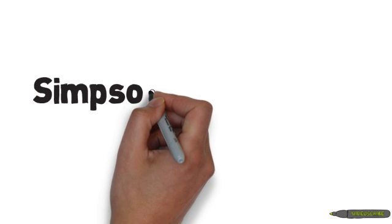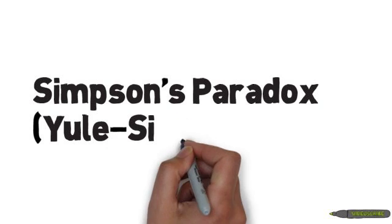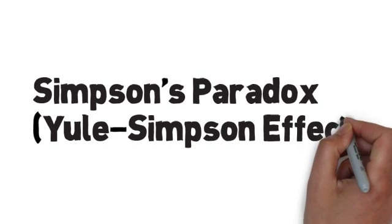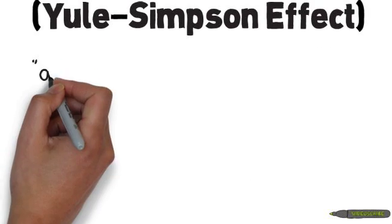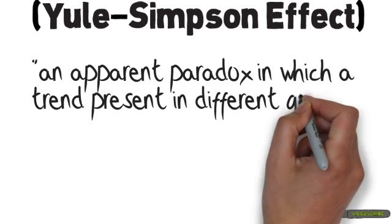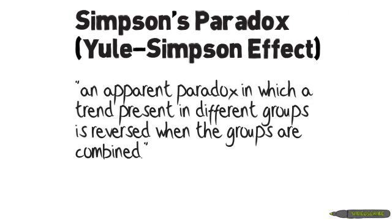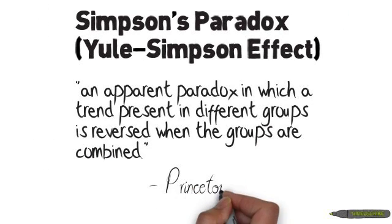Simpson's paradox, or the Yule-Simpson effect, according to Princeton University, is an apparent paradox in which a trend present in different groups is reversed when the groups are combined. This essentially means that things aren't always as they seem, and sometimes in data we find that our answer is wrong once we put everything together.